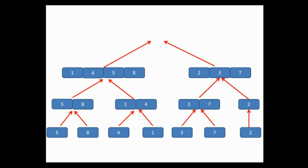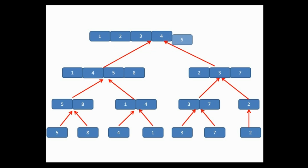We compare one element at a time from both sublists. 1 comes first, then we check the second sublist and find 2, then 3, then 4, then 5, then 7, and finally 8. So two things are happening: first we keep dividing the list into the smallest units, then we compare each element with the adjacent list to sort and merge the two adjacent lists. That's how we finally obtain a sorted list. Let's now take a look at the algorithm.